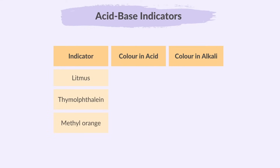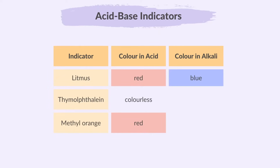Here are the color changes that occur when acids and alkalis are added to these indicators. Acids turn blue litmus paper red, acids make thymolphthalein stay colorless, and acids turn methyl orange red. Alkalis turn red litmus paper blue, alkalis turn thymolphthalein blue, and alkalis turn methyl orange yellow.